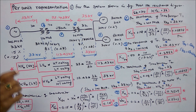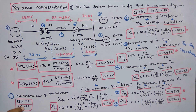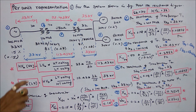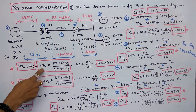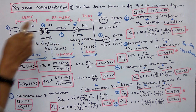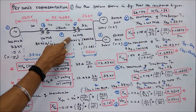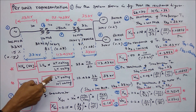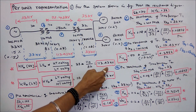We have to choose a base MVA and base kV. Base MVA is equal to 100. Base kV is equal to 33. We have to find what is the transmission voltage. High voltage kV base is equal to low voltage base of 33 kV into HT rating of 110, divided by LT rating of 32. That is 33 into 110 divided by 32, which equals 113.43 kV. This is the base kV of the transmission line.